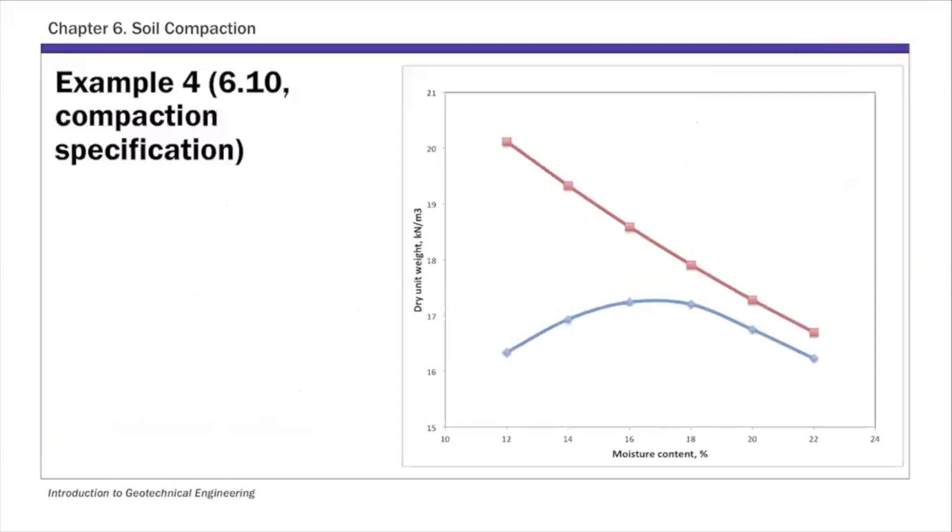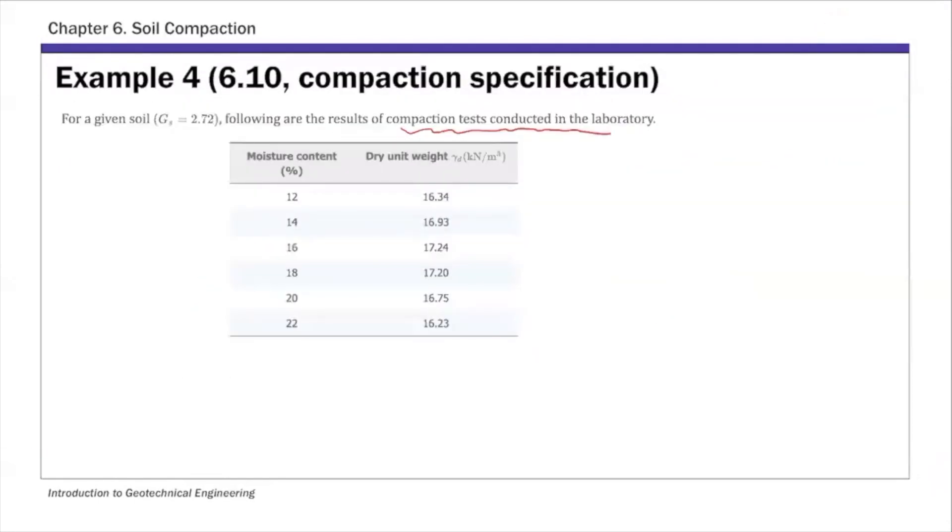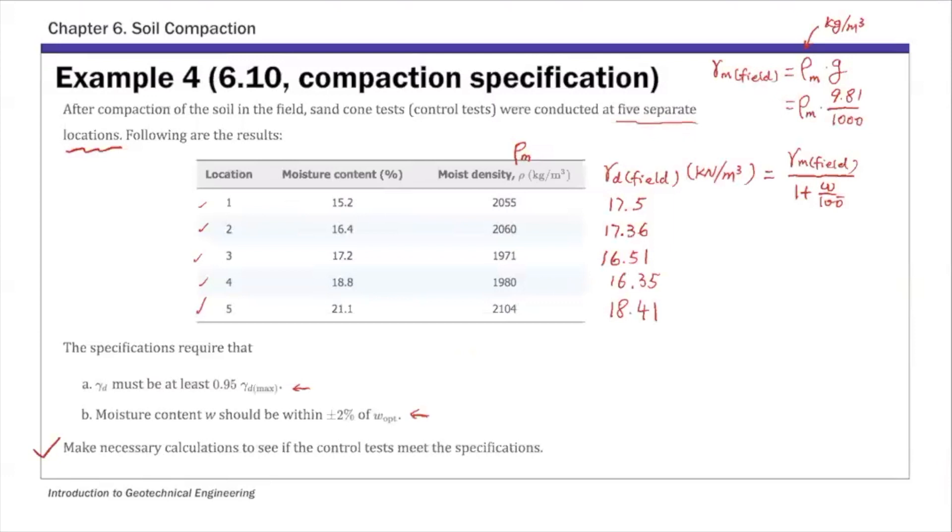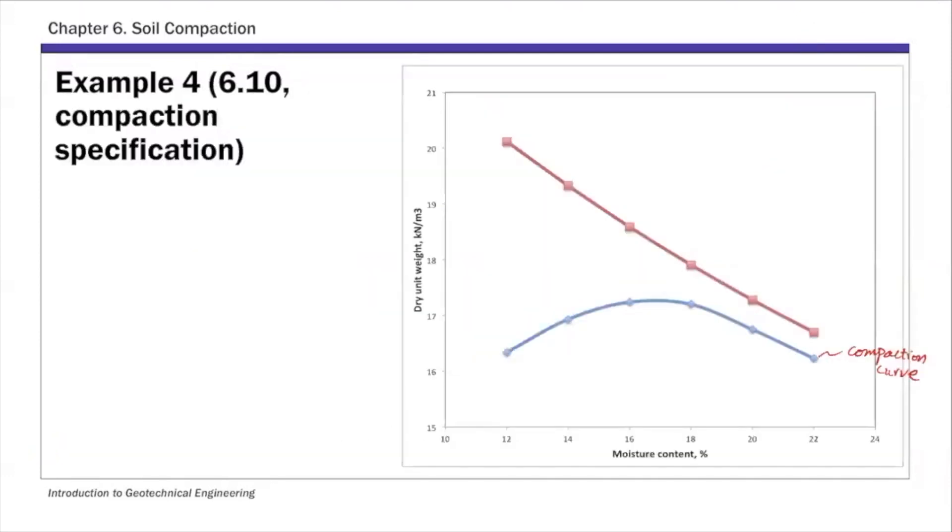And to do that, so this slide here shows the compaction curve. So this compaction curve is from your lab proctor test. And that's basically based on these two columns of data. So that's lab compaction test. And also I included on this plot, this slide, this is zero air void line. I put this one here also, because as we mentioned last time, all the compaction curves should lie to the left of this zero air void line. So that's the theoretical maximum for dry unit weight. That means your in-situ data should also plot below this as well.